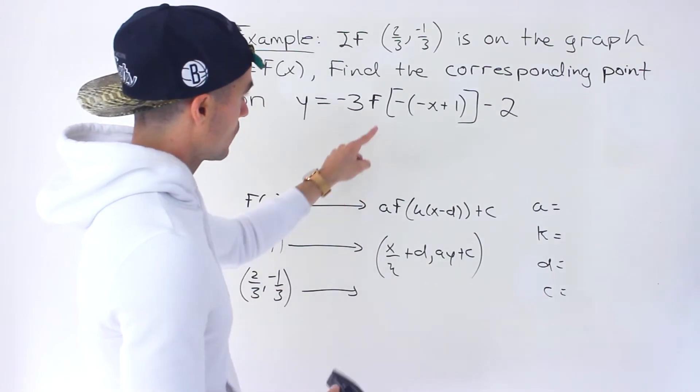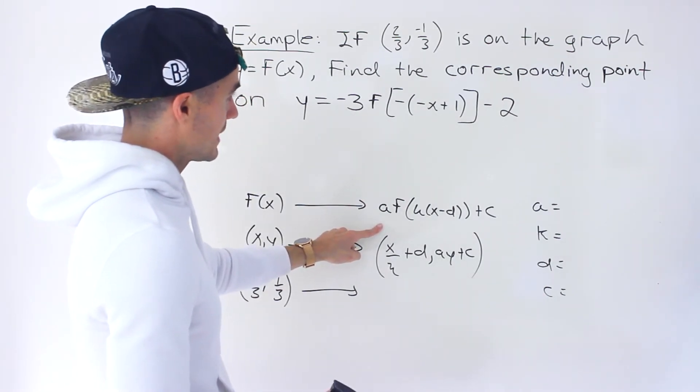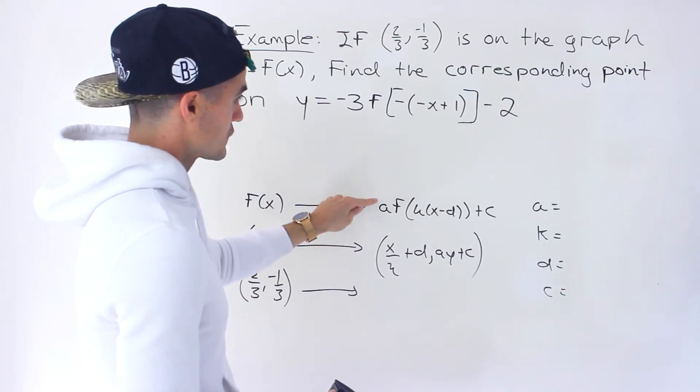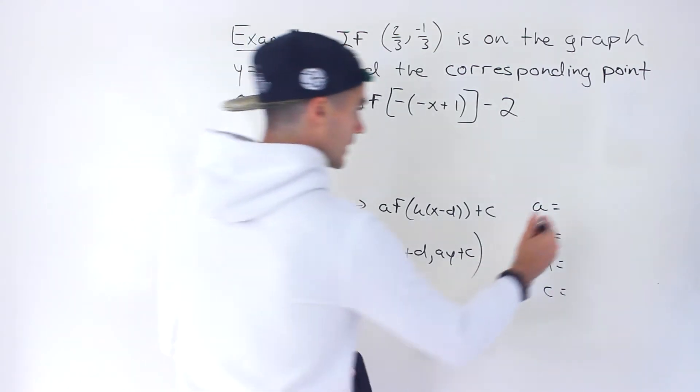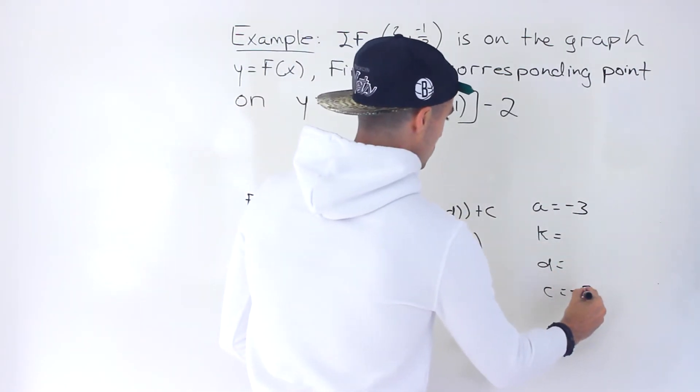And so what we want is for this to be in this same format. And notice that it is almost in this format. Notice the a value, easy to get, it's negative 3. The c value is easy to get, it's negative 2.